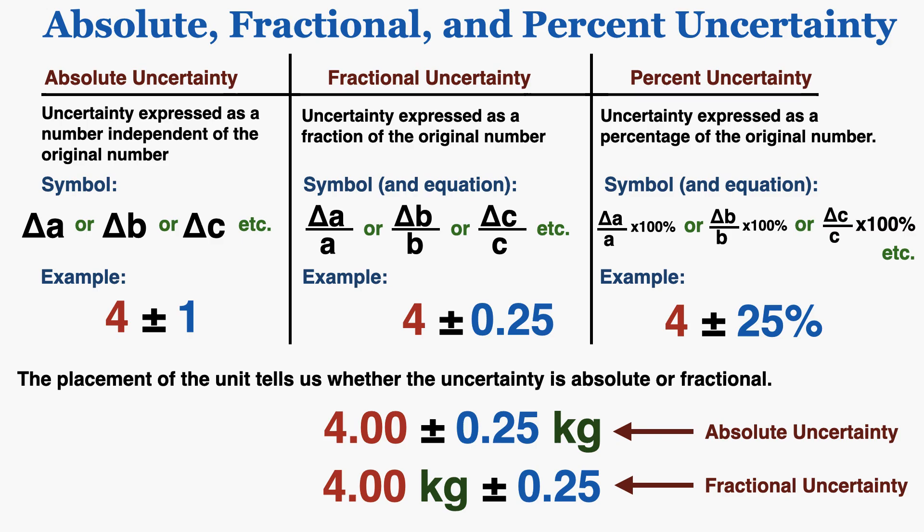You can have decimal uncertainties that are absolute, so a way to understand whether an uncertainty is absolute or fractional is to look at where the unit is. If it's an absolute uncertainty, the unit appears after both the number and the uncertainty. If it's a fractional uncertainty, the unit is only written after the number, not after the uncertainty.